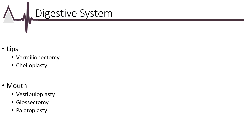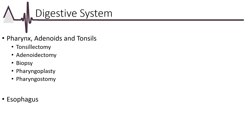A glossectomy is removal of the tongue; code selection is based on the amount of tongue and additional tissue removed. Palatoplasty is a plastic repair or reconstruction on the palate for a patient with a cleft palate. Palatine tonsils are removed with a tonsillectomy. Adenoids are pharyngeal tonsils located near the opening of the nasal cavity; when enlarged they may interfere with breathing, and removal is an adenoidectomy. The patient's age and whether the procedure is primary or secondary are factors in code selection. A pharyngeoplasty is surgical repair of the pharynx involving flaps from mucous membranes, tongue, and nearby tissue.